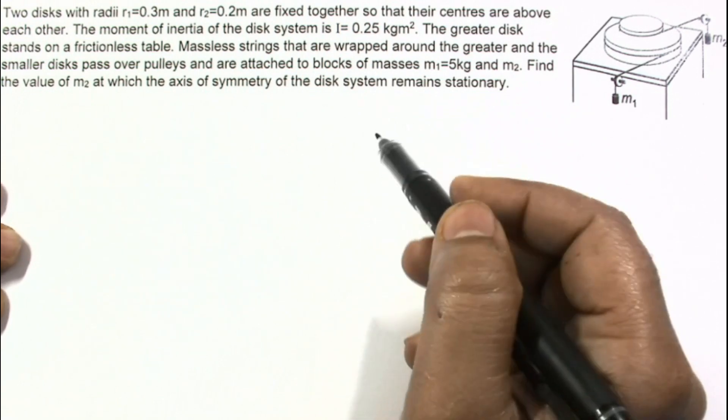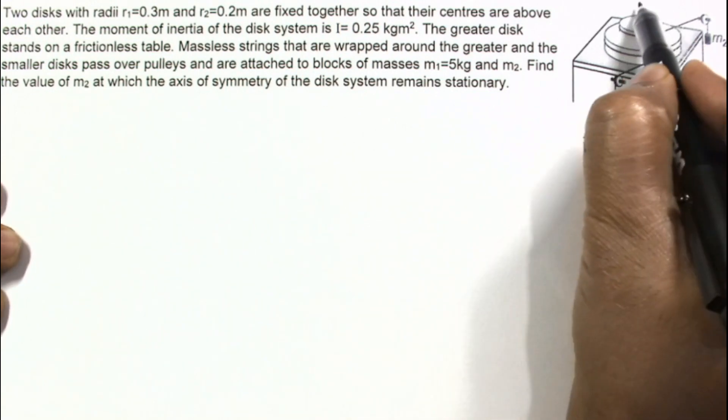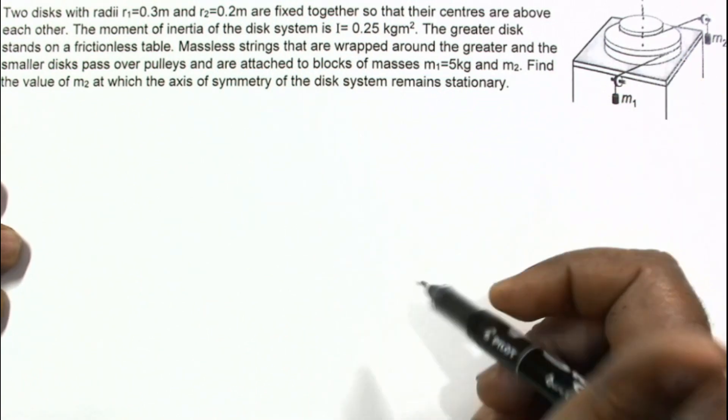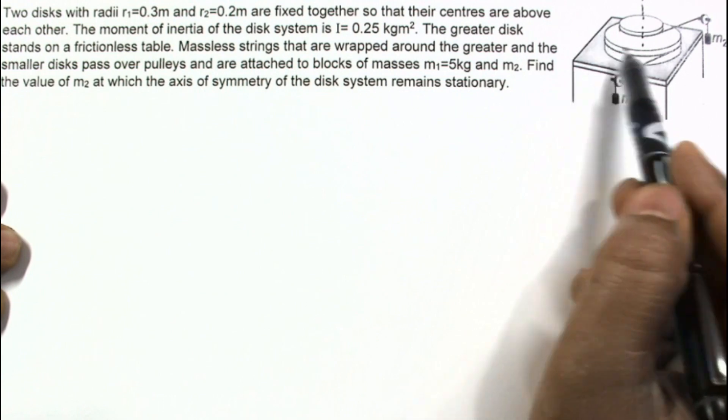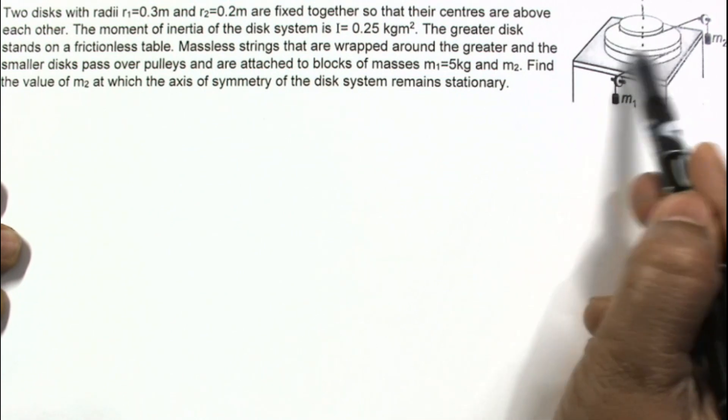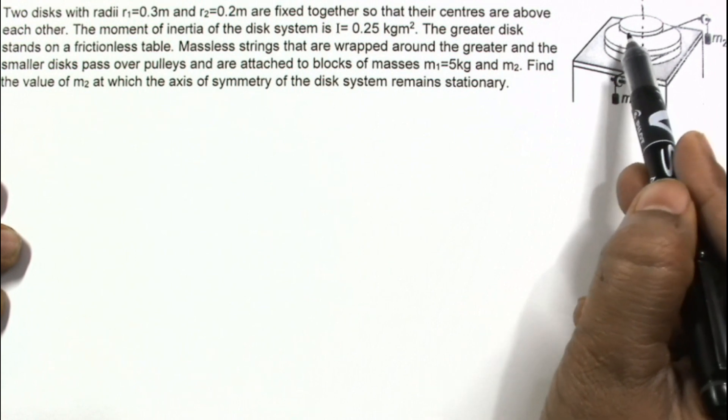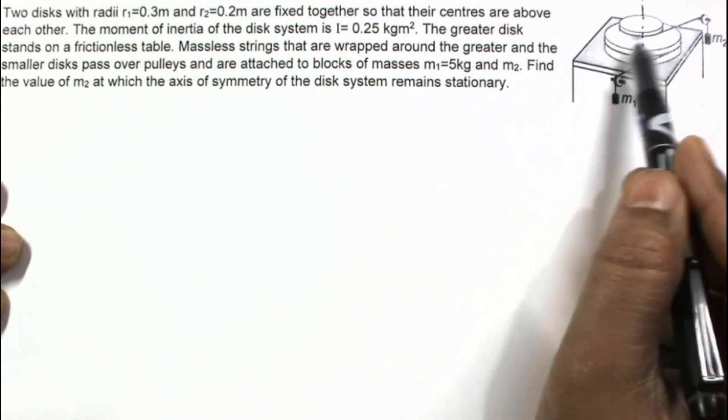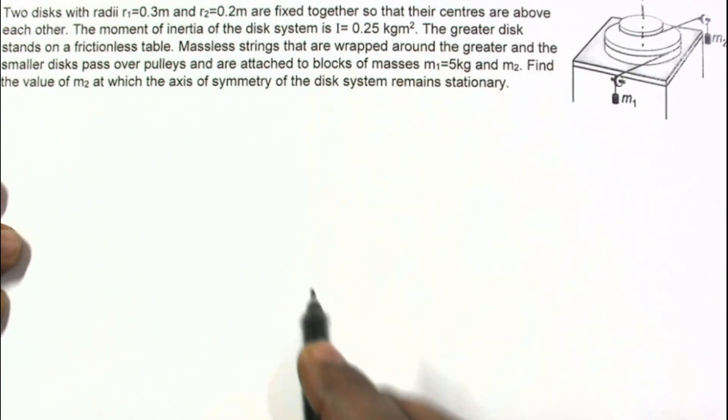So we are given that the axis of the disc system is not moving. The disc system is not moving. If we see in the horizontal plane, the forces are in the horizontal plane.